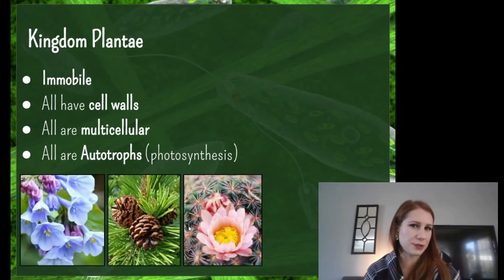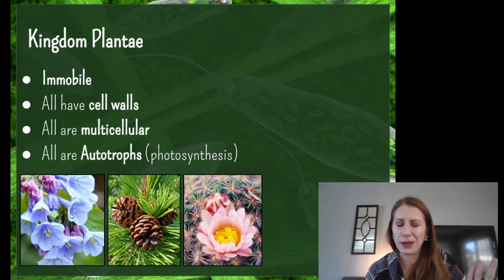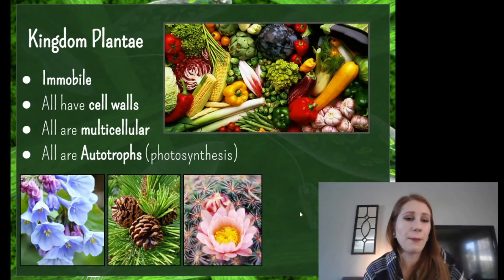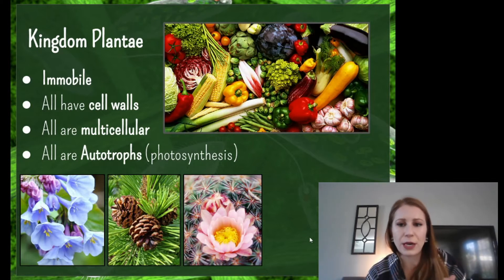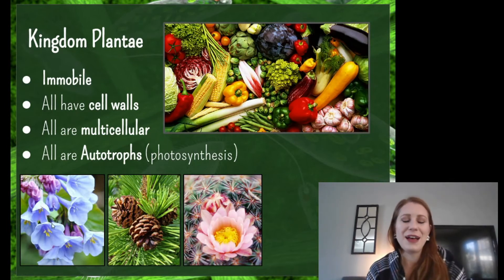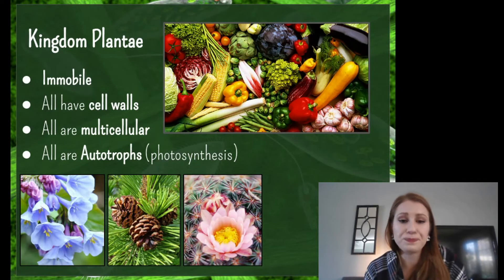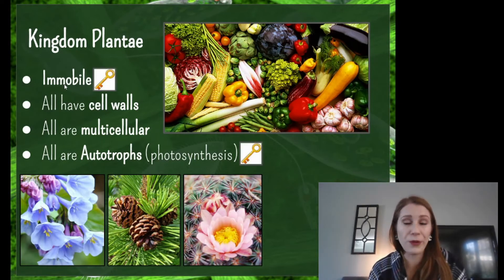Here are some basic examples of plants: flowers that look like freesia, a conifer that looks like a pine tree, and a cactus. Remember, all the fruits and vegetables you eat are plants as well — they're the fruit or the plant itself. Plants aren't just the flowery things we see in our gardens; it's also all the food we eat that would be a fruit or a vegetable. Our big keys for plants: they're immobile and they are autotrophs — they make their own food.